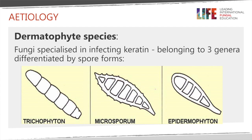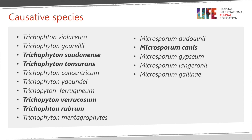There are three genera that belong to this group of fungi called dermatophytes: the Trichophyton, the Microsporum, and the Epidermophyton. In tinea capitis, two of the genera cause infections — Trichophyton and Microsporum. Many species cause tinea capitis, and the ones highlighted in bold — Trichophyton sudanense, Trichophyton tonsurans, Trichophyton verrucosum, and Trichophyton rubrum — are among the commonest in that group. In the Microsporum group, Microsporum canis is one of the most commonly found species causing tinea capitis.